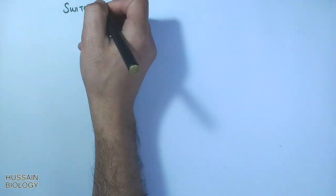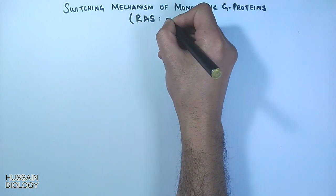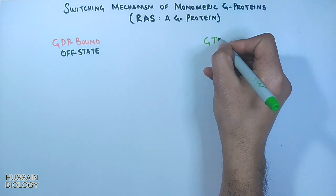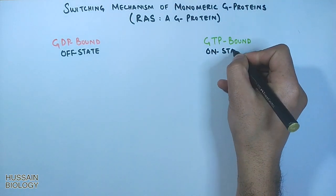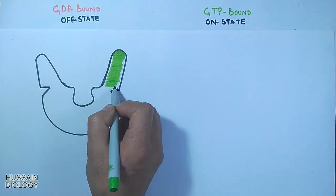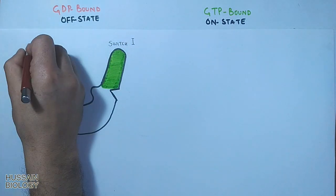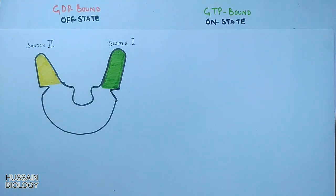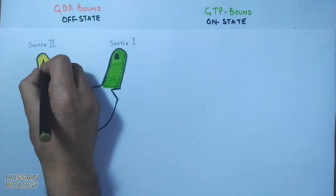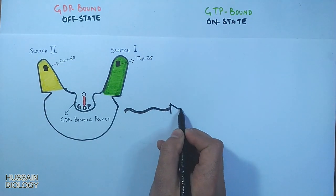Now let's see the switching mechanism of monomeric G-proteins, like the RAS protein. The GDP-bound state is the off state whereas the GTP-bound state is the on state. In this diagram we can see the monomeric G-protein which has two domains — left and right — that form switch1 and switch2, with the GDP binding pocket in the middle. Within the switches we have threonine and glycine residues in switch1 and switch2 respectively, denoted here by black squares.